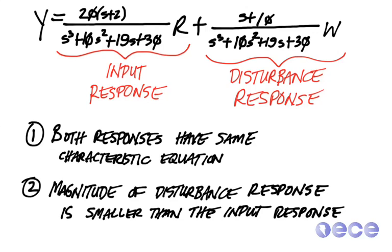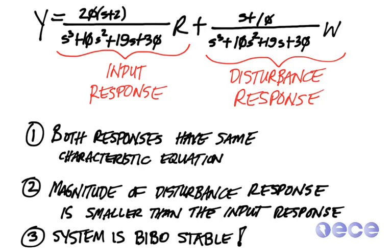Secondly, the magnitude of the disturbance response is smaller than the input response. This is actually good. If our input is generally larger than the disturbance, then we're mainly going to be responding to the input. But if the disturbance is much larger than the input, then we may be reacting more to the disturbance. But most importantly, the system is BIBO stable.